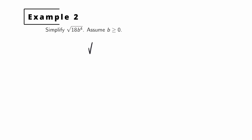We start by finding the prime factorization of the numerical factors. 18 can be written as 3 squared times 2, since it's 9 times 2. And b to the 4th can be written as b squared, squared. Now we use the multiplication property and write this as the square root of 3 squared, times the square root of 2, times the square root of b squared squared.